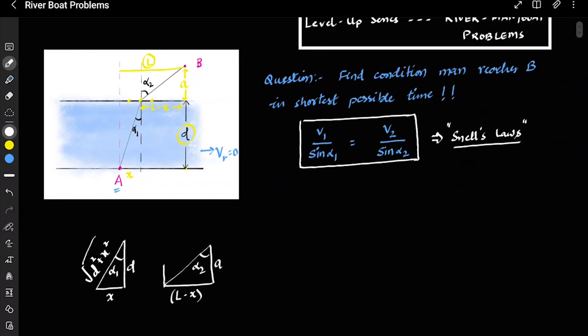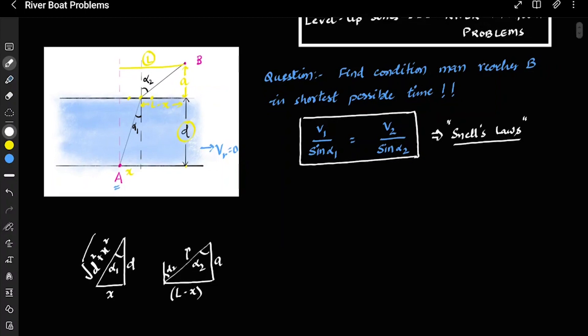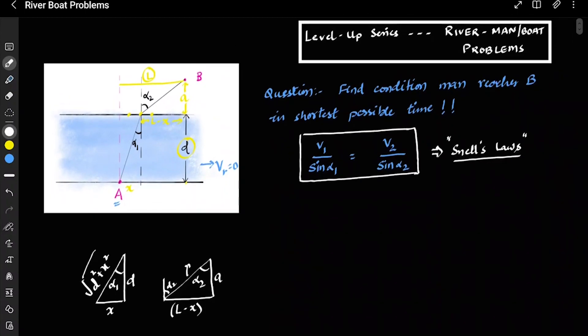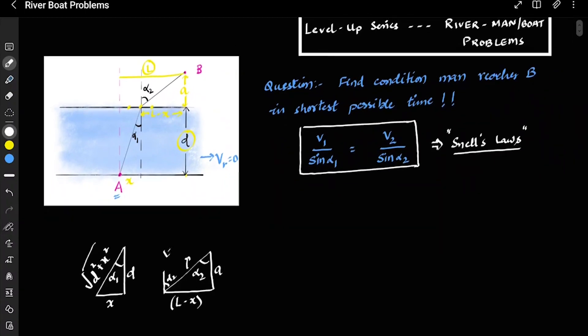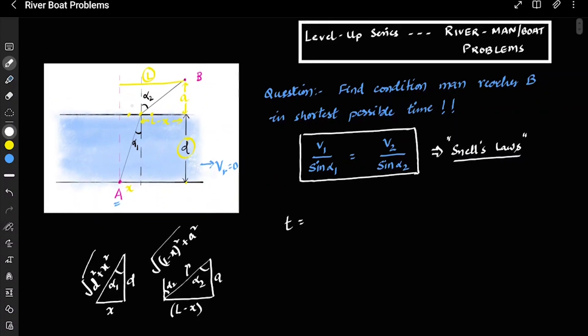This angle was alpha 2, so this angle is alpha 2. This is A, this is L minus x, and therefore it was given that this was alpha 2. And this length will be equal to L minus x whole square plus A square under root. So now time, total time will be equal to this path. Let's call it O, let me call it O.